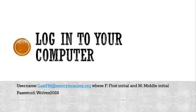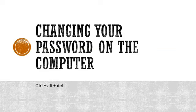A big common mistake people make with our email is they type .com instead of .org, so just be mindful of that. The password for all incoming freshmen is WOLVES2028 — all spelled together with a capital W. You might have one or two students in this orientation who are not freshmen because we have a couple of transfers. If a student is not a freshman, her password is just the same as her graduation year — so it might be 2027 or 2026. They'll log in like that first, and then we will have them change their password.